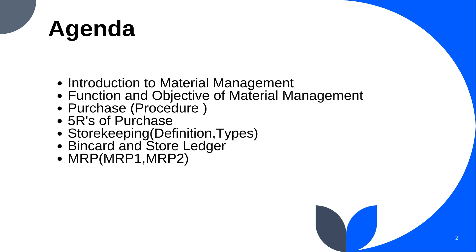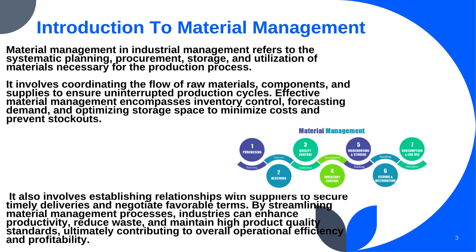Material management in industrial management encompasses the strategic planning, procurement, handling and utilization of materials essential for production processes. It involves coordinating the flow of raw materials, components and supplies to ensure uninterrupted production cycles while optimizing inventory levels to minimize holding costs. Effective material management strategies also include forecasting demand, negotiating contracts with suppliers, and implementing inventory control systems.